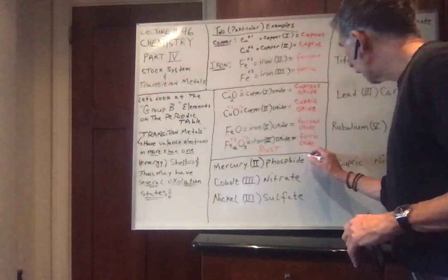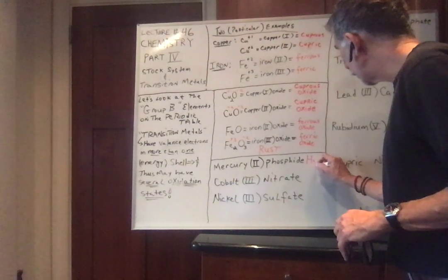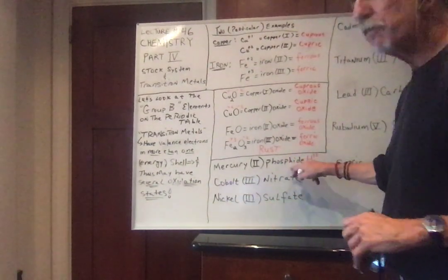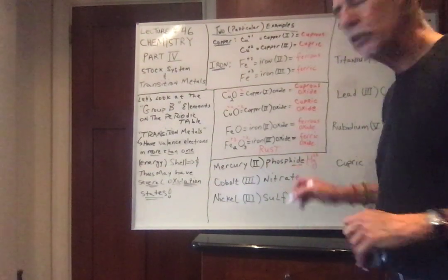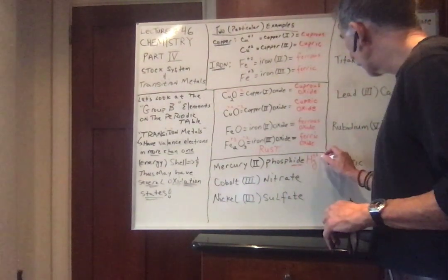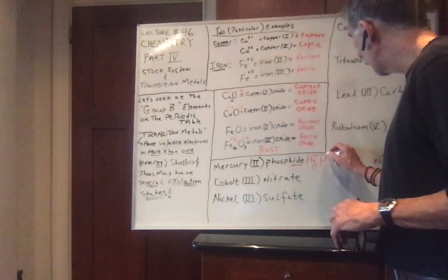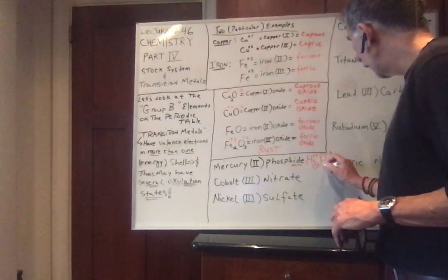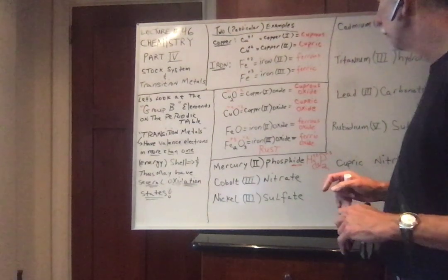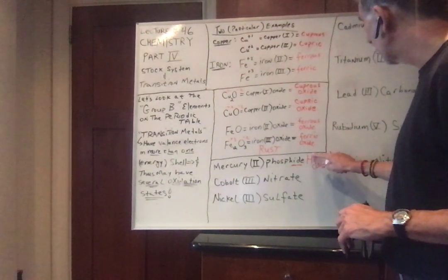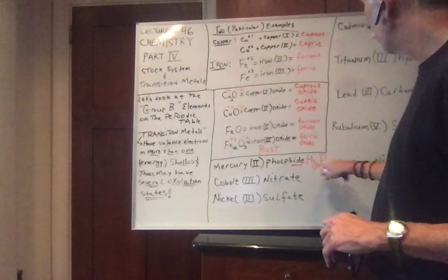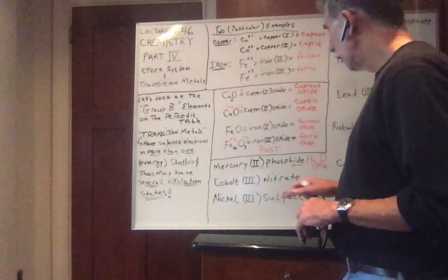Mercury 2 phosphide. Hg plus 2, phosphide - remember -ide is just the element. I try to fool you. P has a minus 3. So if we put a 3 there and a 2 there, now I can erase the oxidation numbers, and there's mercury 2 phosphide.